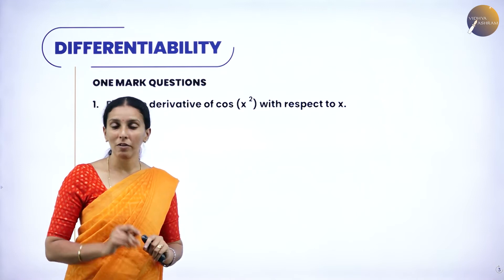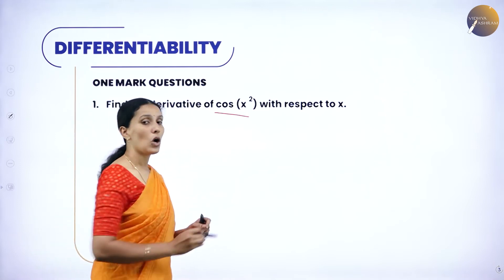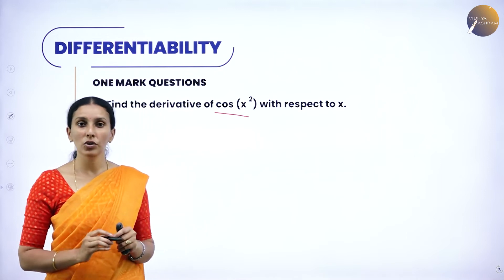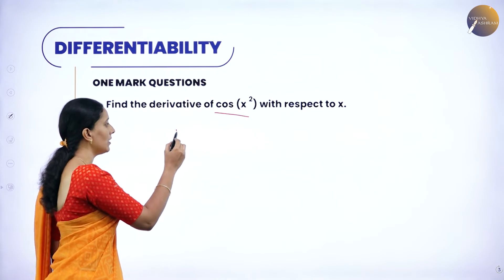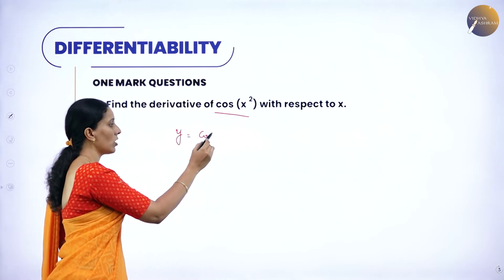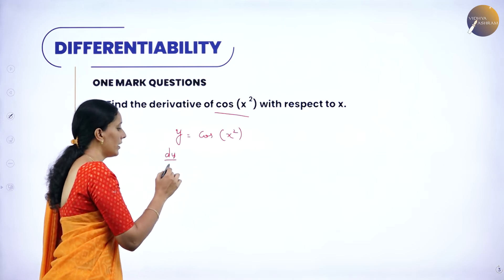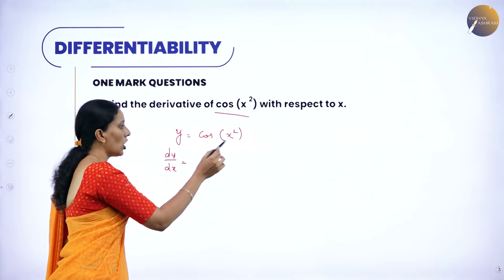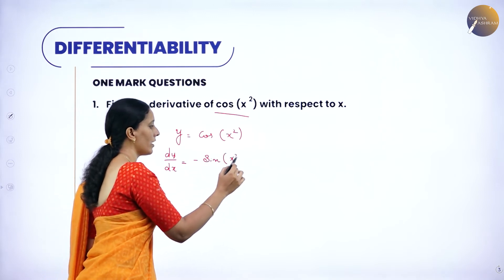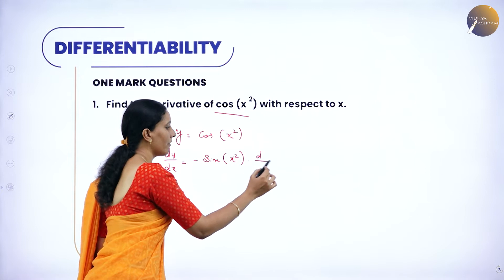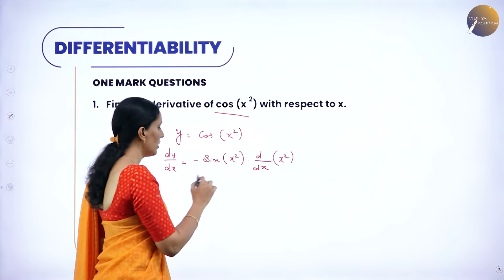Therefore, the derivative of x² is 2x. Now, cos(x²) is a composite function, so we are going to use the chain rule here. Let y = cos(x²). The derivative dy/dx: cos of x² becomes minus sin(x²). Again, we have to differentiate x² because it is a composite function — using the chain rule.